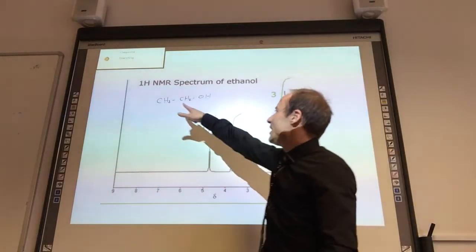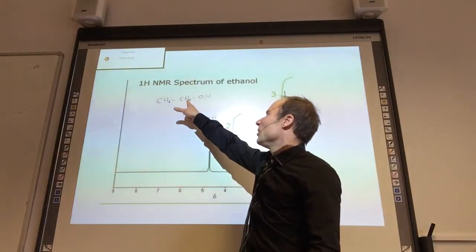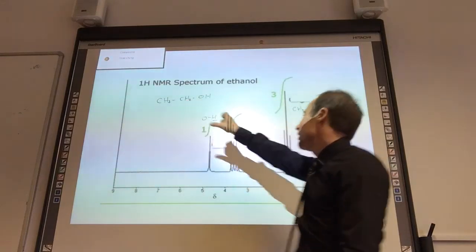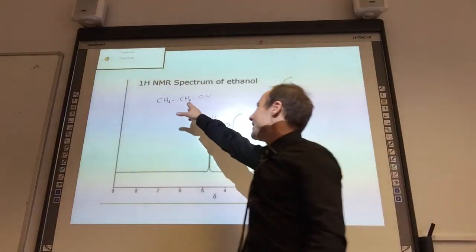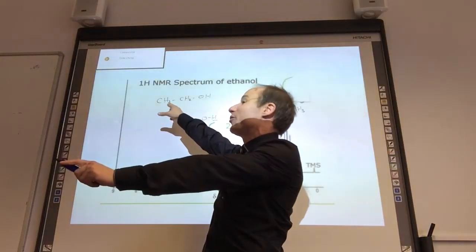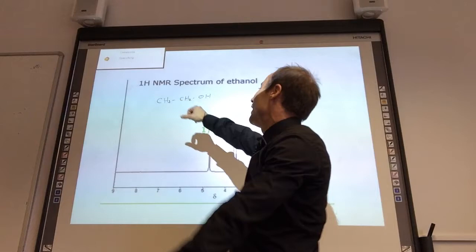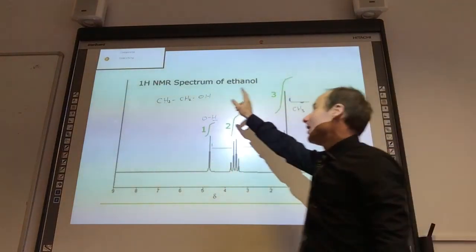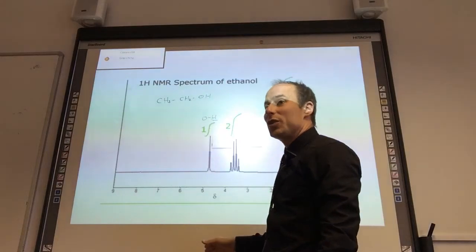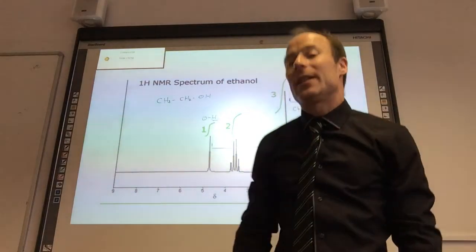Let's just think about the splitting. The CH3 group has got two hydrogens on a neighboring carbon and therefore is split into a triplet. The CH2 has got three neighbors and therefore is split into a quartet. And the OH doesn't cause splitting and is never split itself.